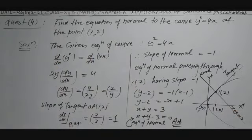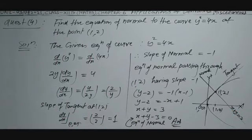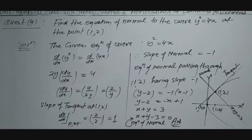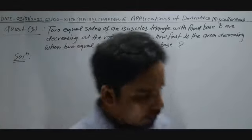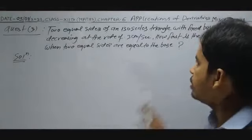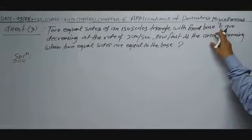Now this question is completed. Come to the next question. This is question number 3 of miscellaneous chapter 6: Two equal sides of an isosceles triangle with base B are decreasing at the rate of 3 cm per second.